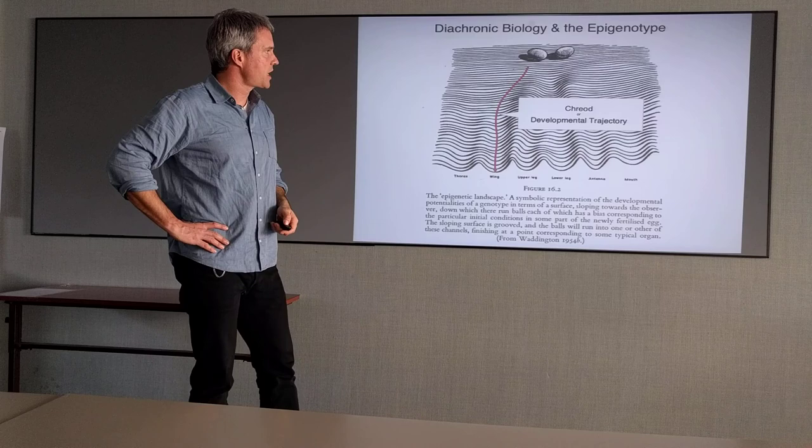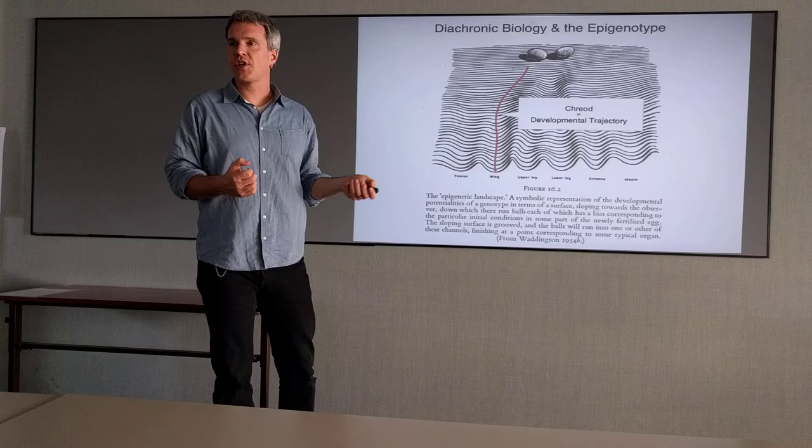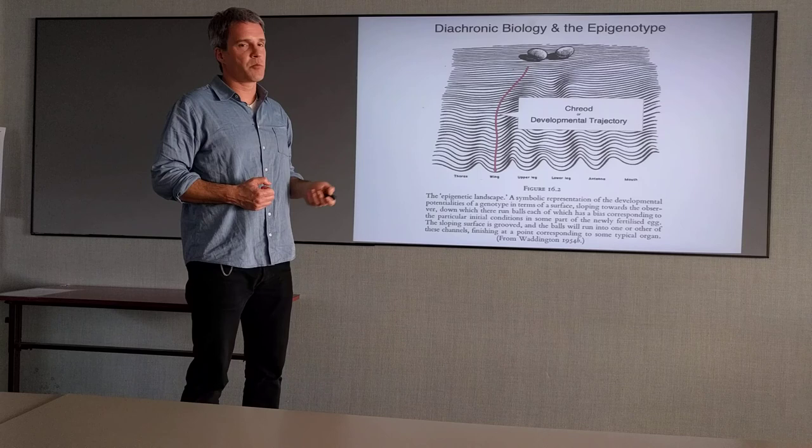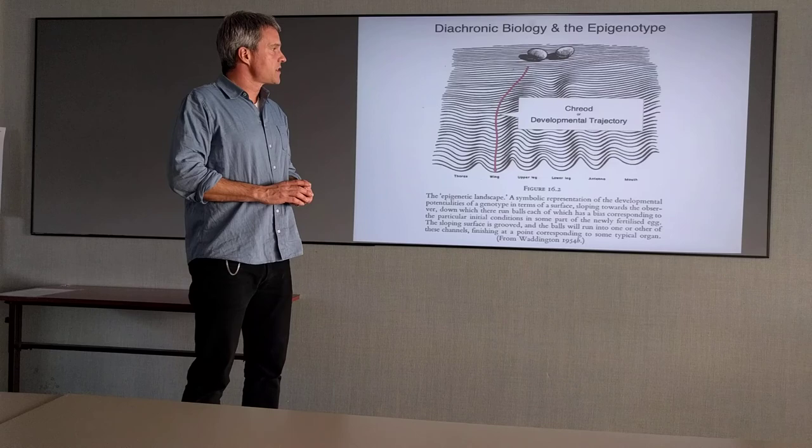What evolution does, of course, is tug at this landscape and change it. So the way this landscape is shaped constrains very much what evolution can and cannot do. If you understand explicitly the shape of this landscape, you understand the variability in the population. So we go step by step towards this direction.